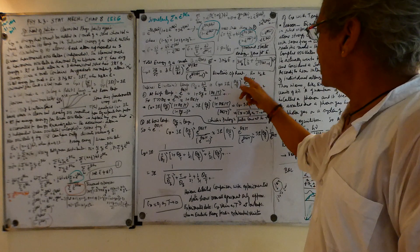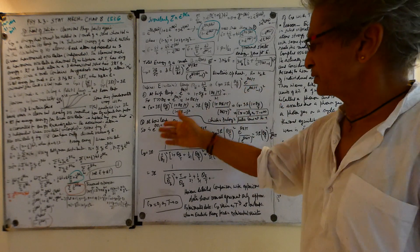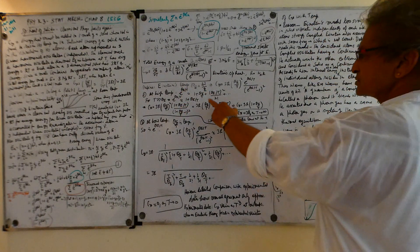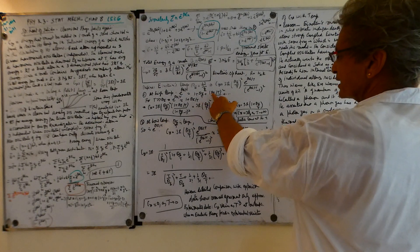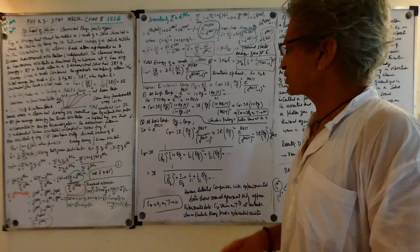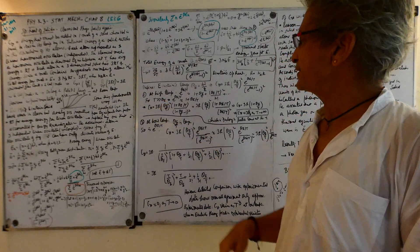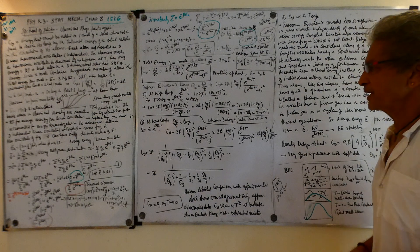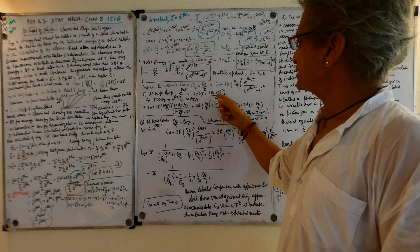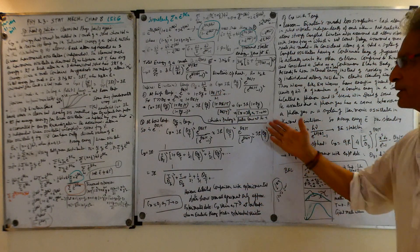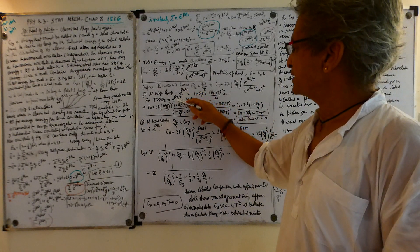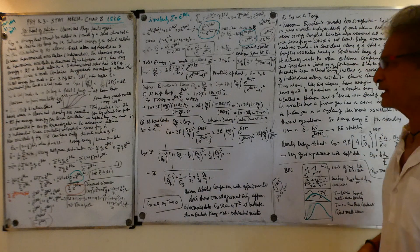I have expanded this using the Taylor expansion: e^(θ_E/T) = 1 + θ_E/T + (θ_E/T)²/2! + ... For high temperature, T is much larger than θ_E, so the higher-order terms are really small compared to the first term. So we neglect those and approximate e^(θ_E/T) ≈ 1 + θ_E/T.